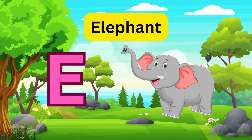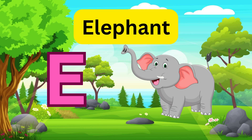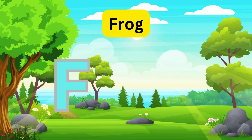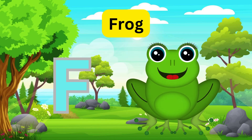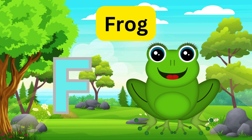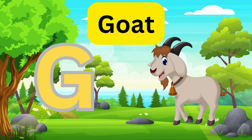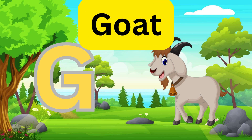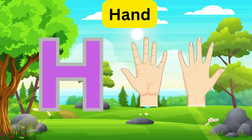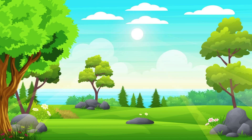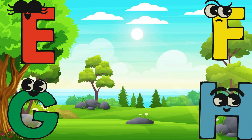E is for Elephant, E-E-Elephant. F is for Frog, F-F-Frog. G is for Goat, G-G-Goat. H is for Hand, H-H-H-Hand.